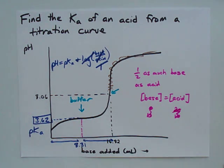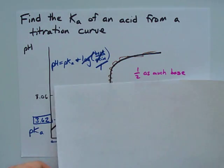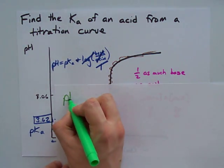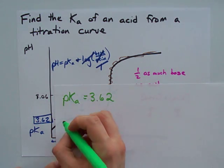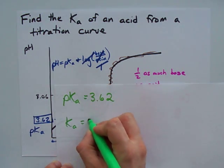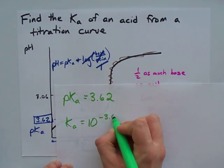And lucky for you, there's a nice, easy way to figure out the Ka from the pKa. If the pKa is 3.62, the Ka is 10 to the negative 3.62.